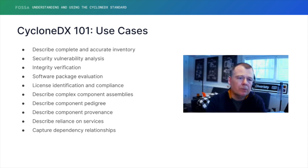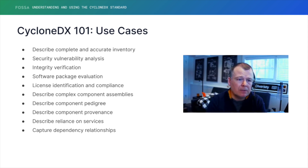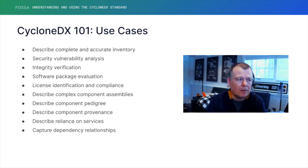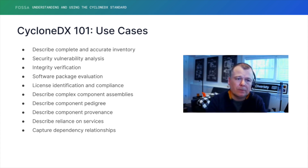There are many different ways to perform integrity verification — both on the BOM itself, which can be independently signed. We support external signatures, but we also support internal signatures as well, including envelope signatures. You can verify those, and you can verify the integrity of the packages themselves with support for hashes and all kinds of other mechanisms.